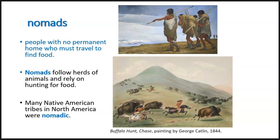Many Native American tribes in North America were nomadic. Some of the Native American peoples who lived in this part of the country, the Plains Indians, many of them were nomadic. Like you can see in this picture, the buffalo — the American bison — and Native Americans, their way of life centered around following those animals. So nomads are people on the move; they do not settle in one place.